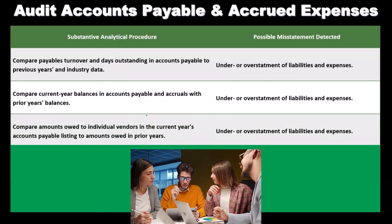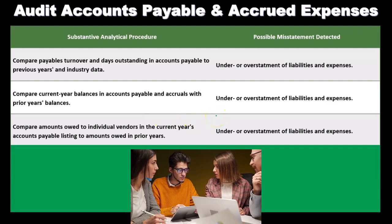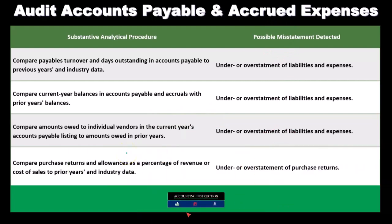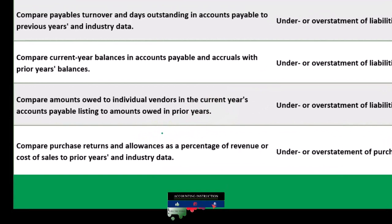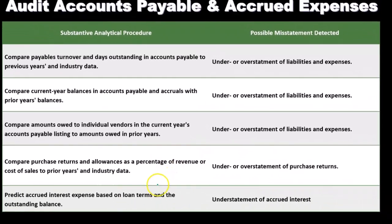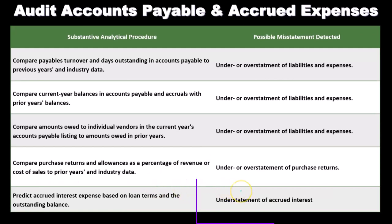Another substantive analytical procedure is to compare amounts owed to individual vendors in the current year's accounts payable listing to amounts owed in prior years, to detect under or over statement of liabilities and expenses. We can also compare purchase returns and allowances as a percentage of revenue or cost of sales to prior years and industry data. Additionally, we can predict accrued interest expense based on loan terms and outstanding balances to detect understatement of accrued interest.